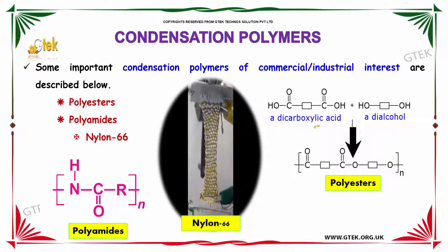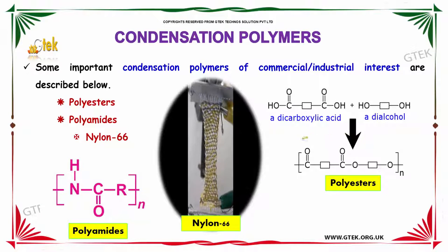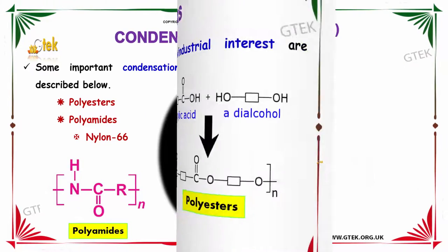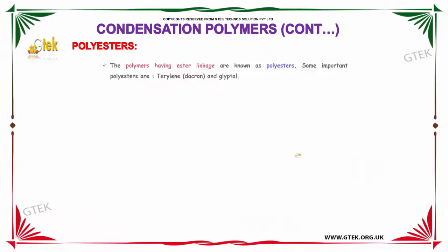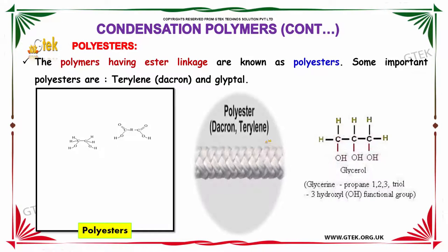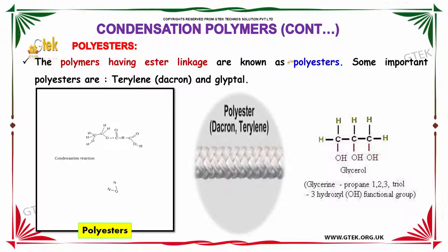Dicarboxylic acid on addition with dialcohol results in the formation of polyesters. The polymers having an ester linkage are known as polyesters. Some important polyesters are Terylene and Glyptyl.